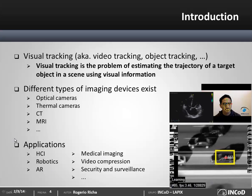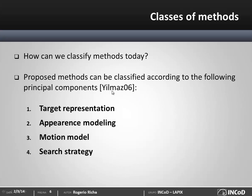So how can we classify solutions available today? Yilmaz, in his survey on object tracking published in 2006, proposed a very interesting classification. He chose to classify visual tracking methods based on four principal components: the target representation, the appearance model, the motion model for the target object, and the search strategy.